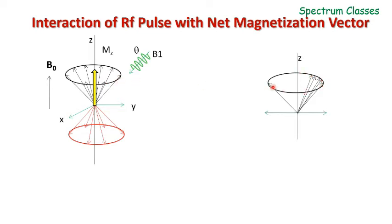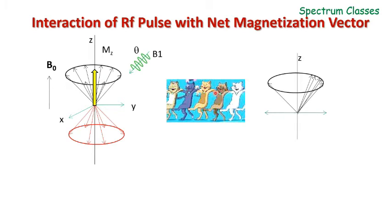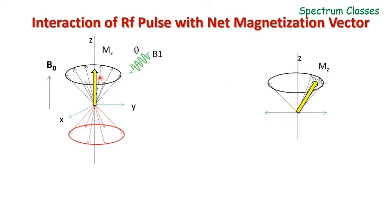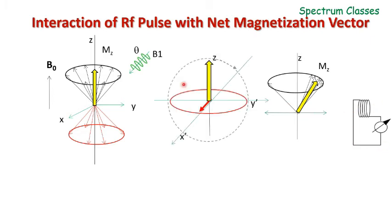This coherent precession can be understood by analogy: when music is on, cats start dancing in a coherent manner — the same is the case with the nuclei. Now, the net magnetization vector will tilt in a new direction. If we place a receiver coil perpendicular to the applied external magnetic field B0 in the y direction, and B1 is applied in the x direction, then the receiver coil is kept in the x direction. When the B1 field is applied, as discussed in the rotating frame of reference, this net magnetization vector starts precessing about the B1 field — that is, about the x axis, in the yz plane.